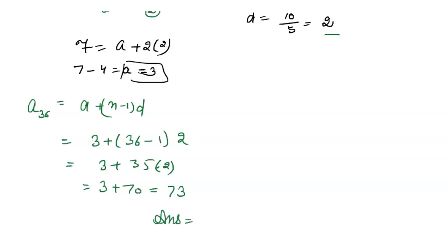So the answer is A36, that means the 36th term of the AP sequence, equals 73. This is your answer. Thank you very much.